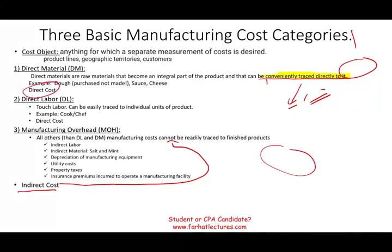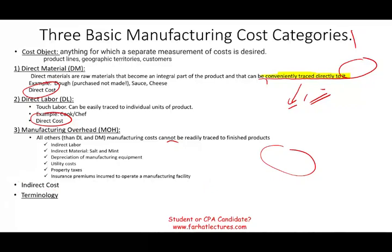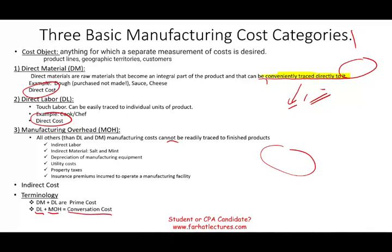So make sure you know: direct cost is direct material and direct labor; indirect cost is manufacturing overhead. Other terminology you need to be familiar with: when we take direct material and direct labor together, we call those prime cost — the main cost to manufacture something. Also, when we take direct labor and manufacturing overhead together, those two are called conversion cost — labor and overhead actually convert the raw inputs into finished goods. These are standard terms you could be asked about on the CPA exam and CMA exam.